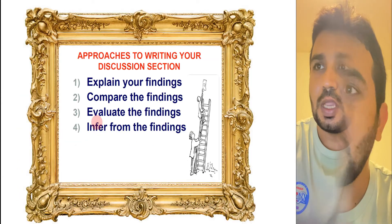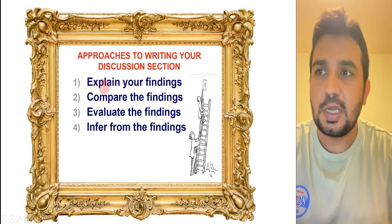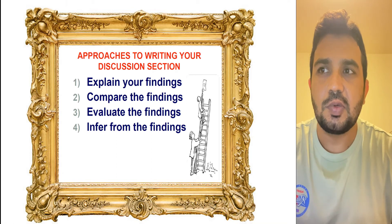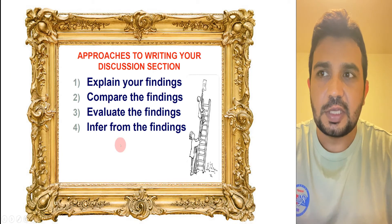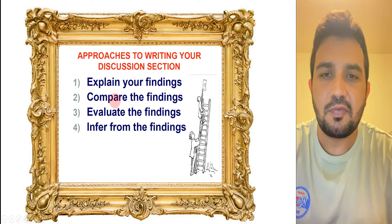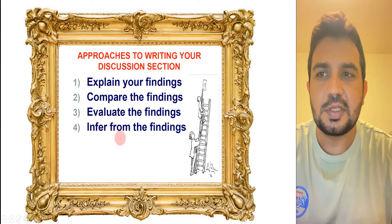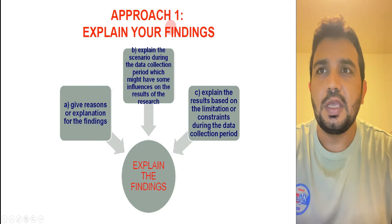To aid our understanding, I have developed and chosen four approaches to write the discussion section. The first approach is to explain your findings. In the first paragraph you explain your results, and in the second paragraph you compare them. The third part is evaluation of the first two parts, and the fourth important part is to infer from the findings.